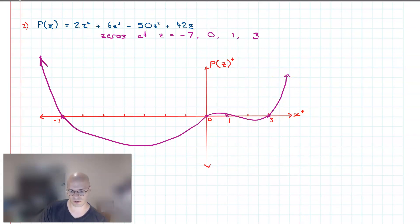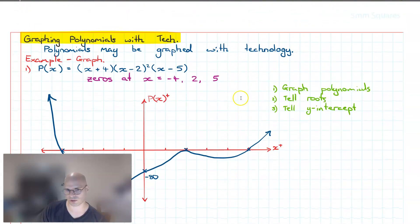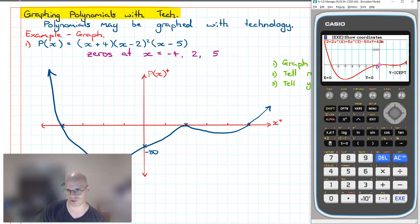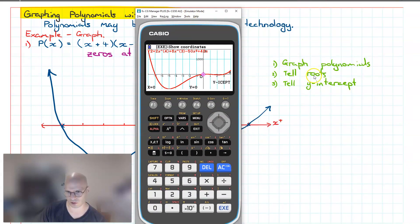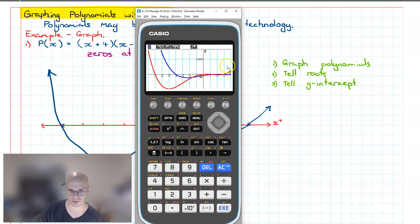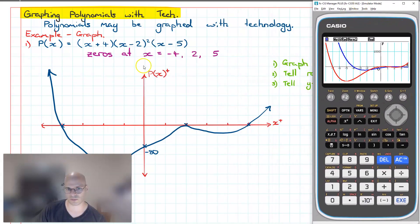In summary, what we looked at in this video was firstly how to enter our polynomials into our calculators, then how to use the calculator to find the roots of the polynomial, and similarly how to find the y-intercept. One more thing we can do is graph both polynomials together — by turning the first one back on using select, we can graph them simultaneously. This was a video demonstrating how we can use technology to graph polynomial functions.